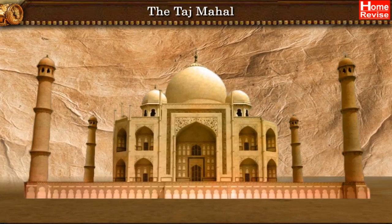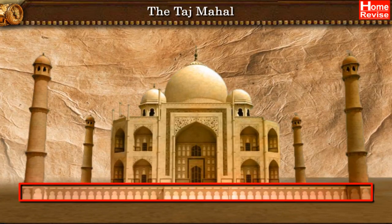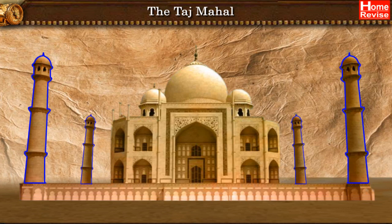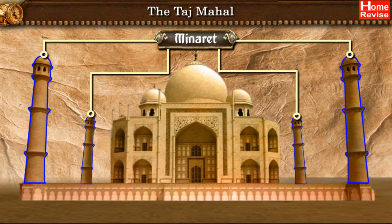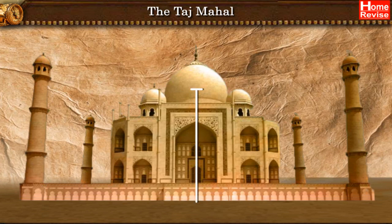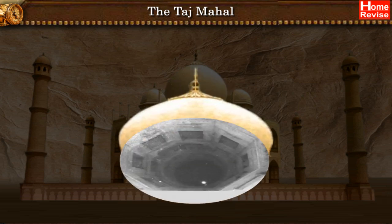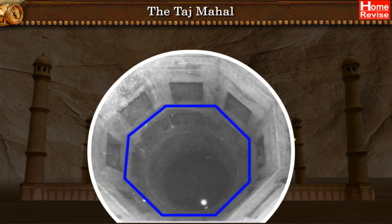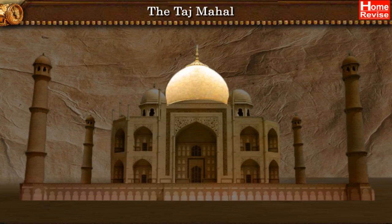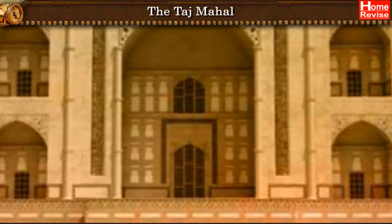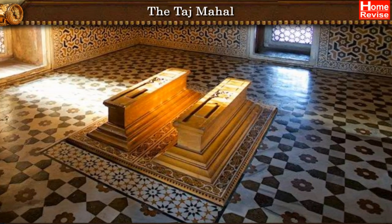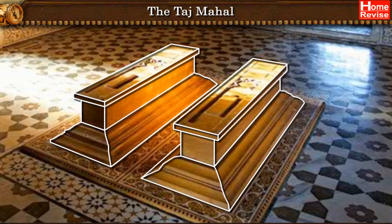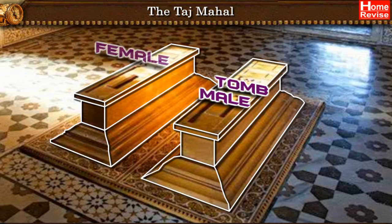The main structure is constructed on a high platform. On each of the four corners of this platform, there is a minaret. The central dome rises to a height of 56.1 metres, and the interior has an octagonal chamber. The marble dome in the centre looks like an inverted lotus. The actual graves are in a lower chamber underground, and they are not equal in size, because the male tomb had to be larger than the female tomb.